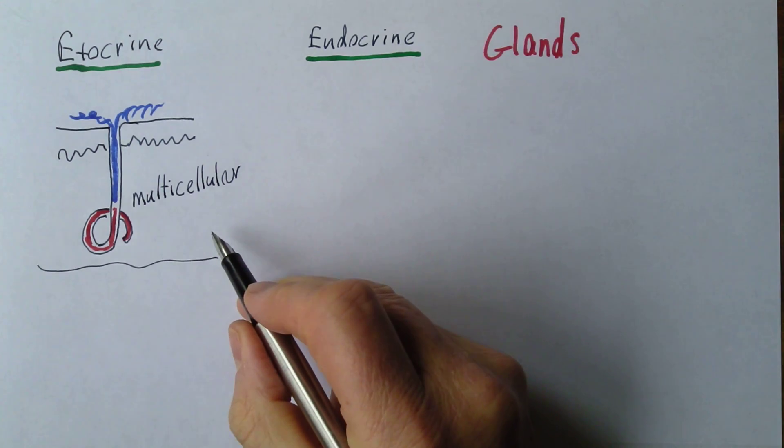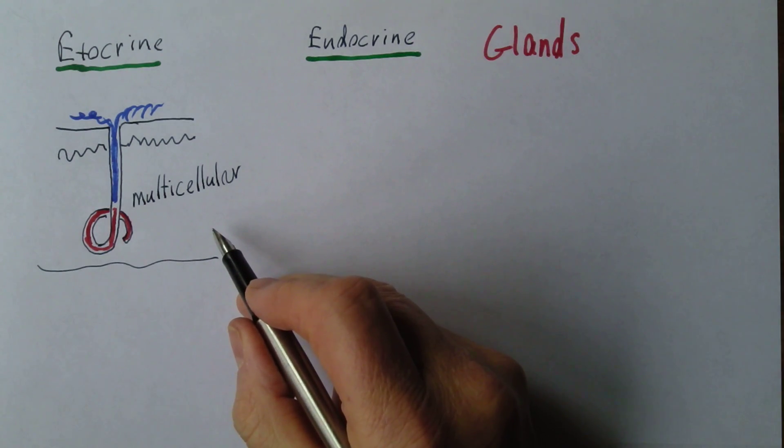Now this one contains many cells, so it's a multicellular exocrine gland. And you might think of other examples. You might think of salivary glands, or maybe mammary glands producing milk in the breast.